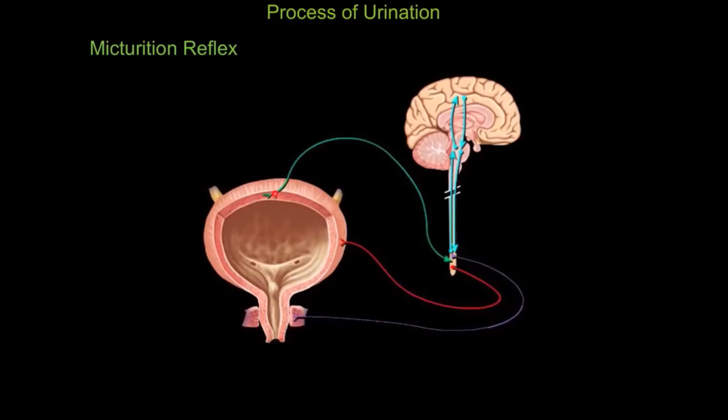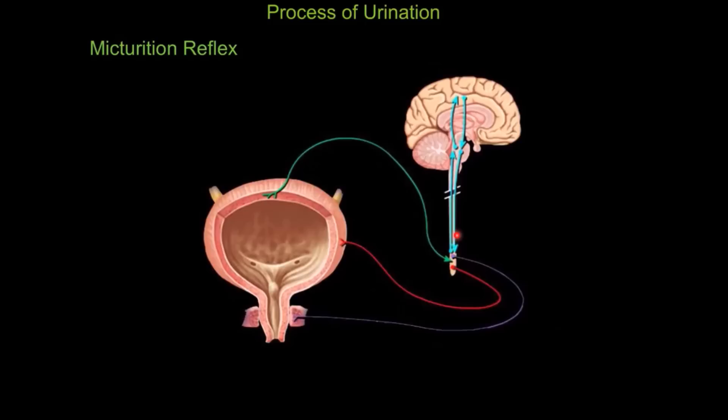That action potential carries on to the motor neuron, causing the smooth muscles of the urinary bladder to contract. Another action potential from the sensory neuron is also sent up the spinal cord to the motor cortex of the cerebrum, from where another action potential with motor input is sent to another motor neuron to stimulate the opening of the urinary sphincters.